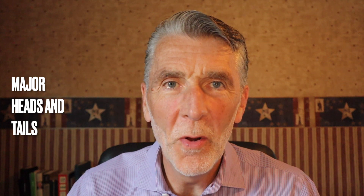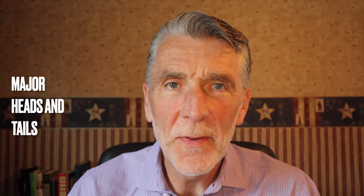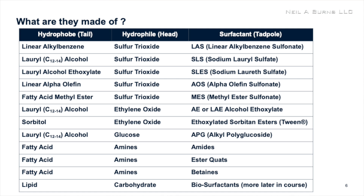So what are they made of — where do the head and the tail of the tadpole come from? Well, the hydrophile — the head of the tadpole — is pretty simple. Sulfur trioxide and ethylene oxide are a huge proportion of all the hydrophiles used in surfactant production: sulfur trioxide to make sulfates and sulfonates, and ethylene oxide to make ethoxylates of various types and also going into ether sulfates. So the hydrophiles are relatively simple.